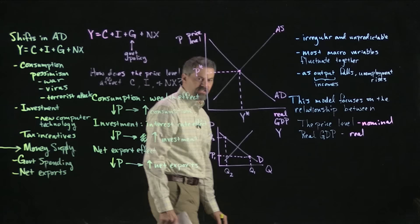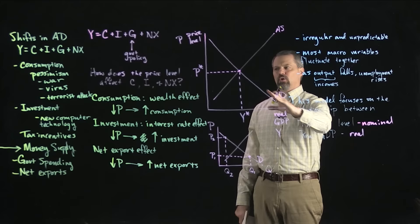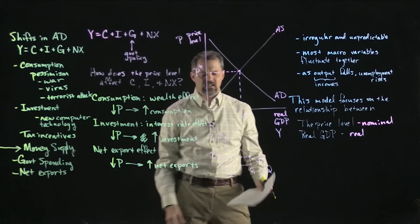So now we know why the aggregate demand curve slopes downward, and we know what causes aggregate demand to shift — shifts from consumption, investment, government spending, and net exports. What we need to do now is think about aggregate supply.